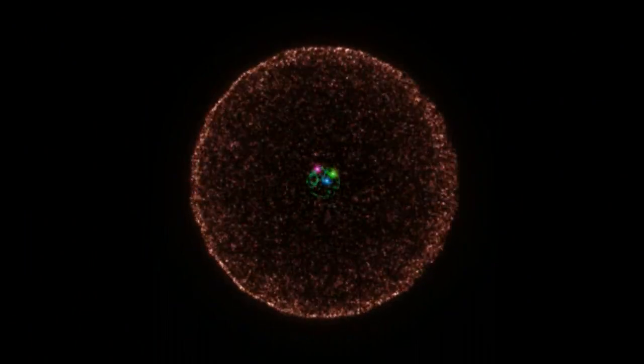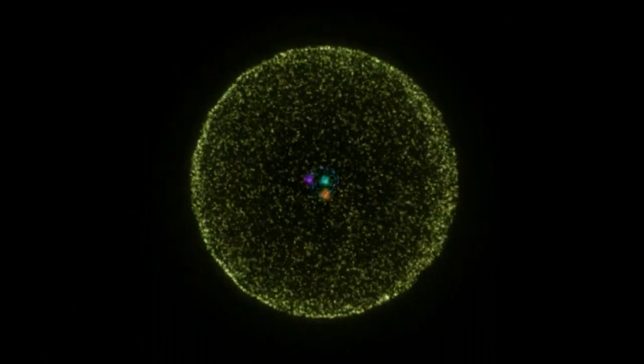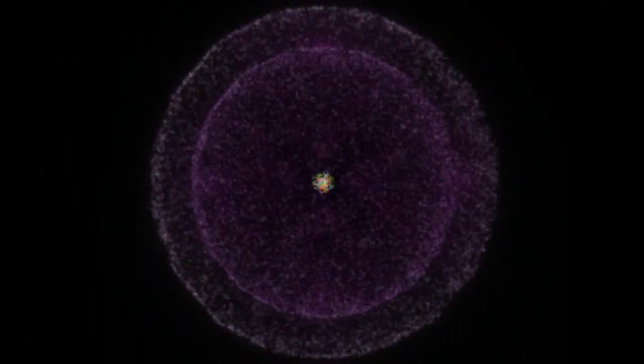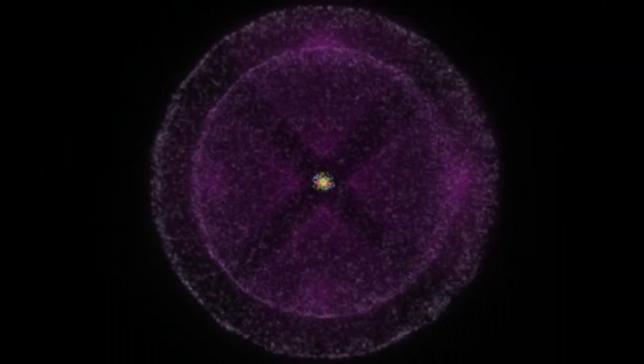But of course the atom is not always found in the lowest energy state. As there are other orbits allowed in Bohr's model, there are other higher energy states in the quantum mechanical hydrogen atom. These states are defined primarily by the quantum number N that we talked about earlier.